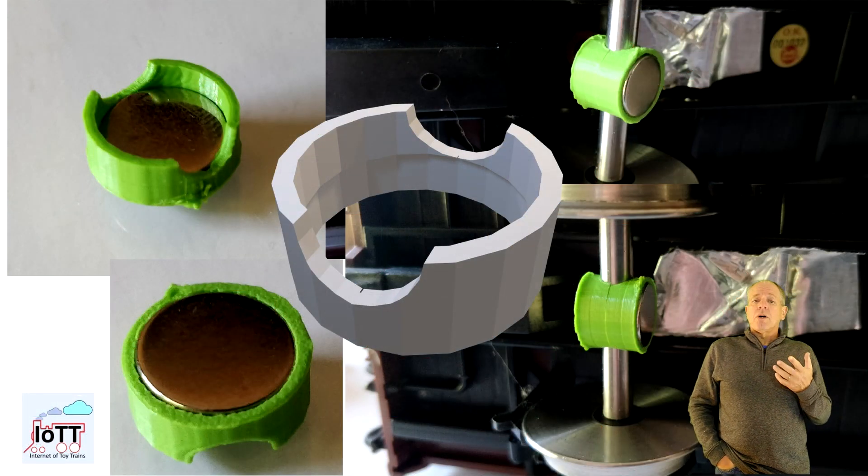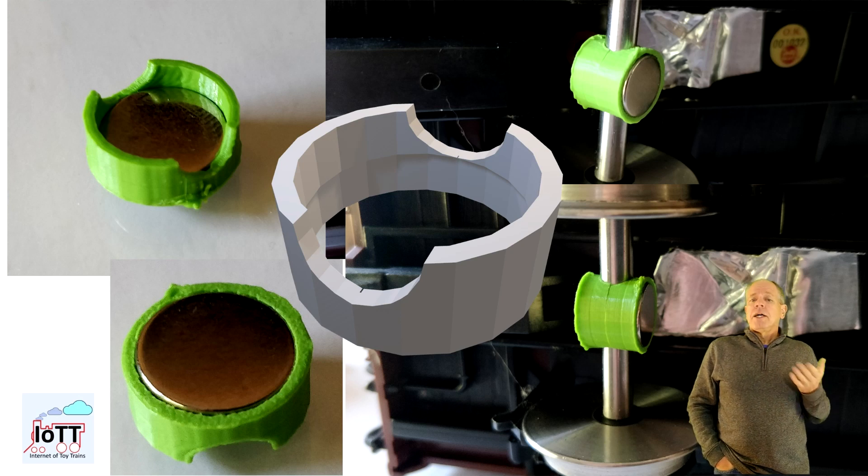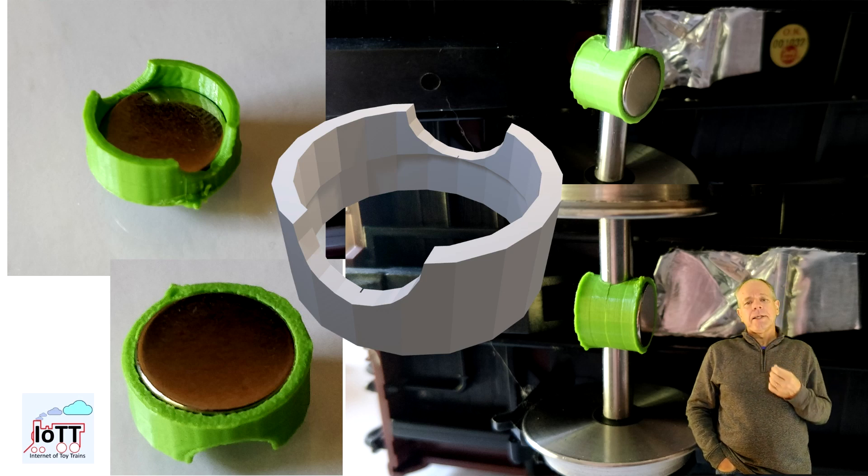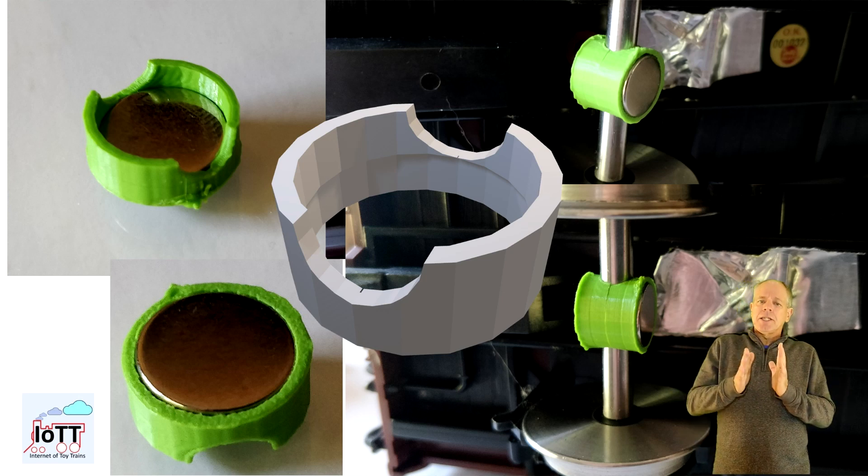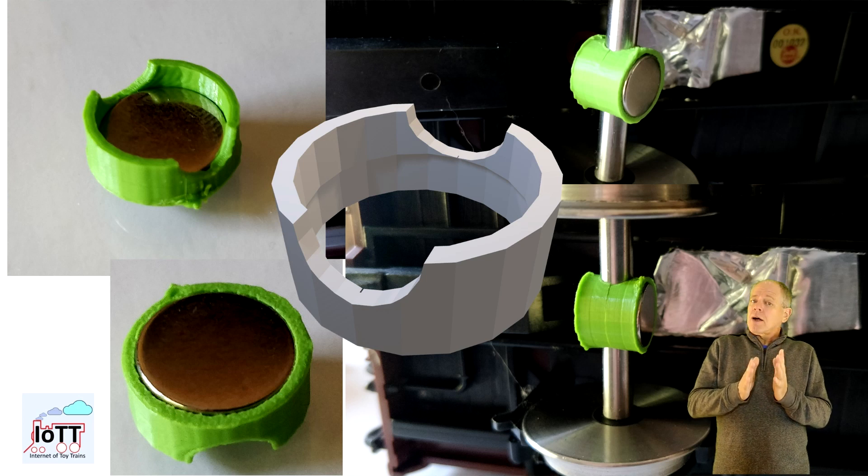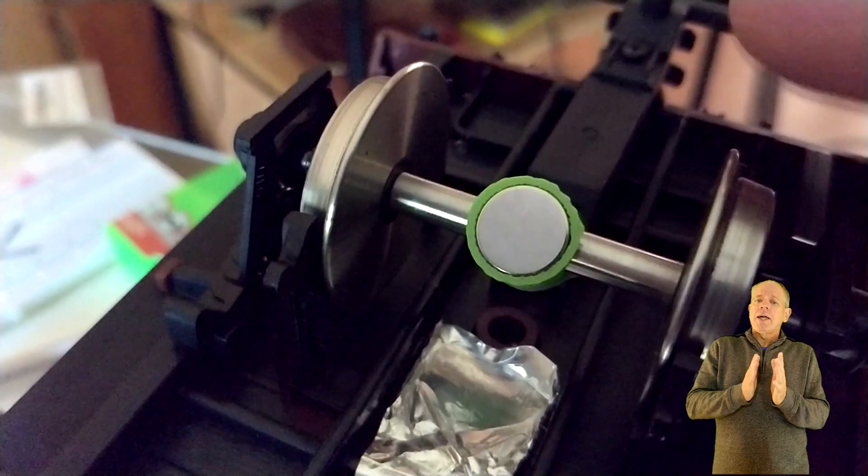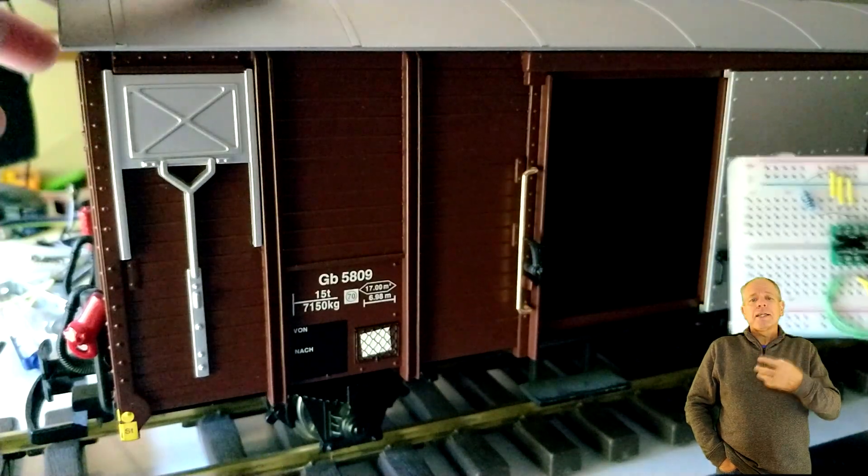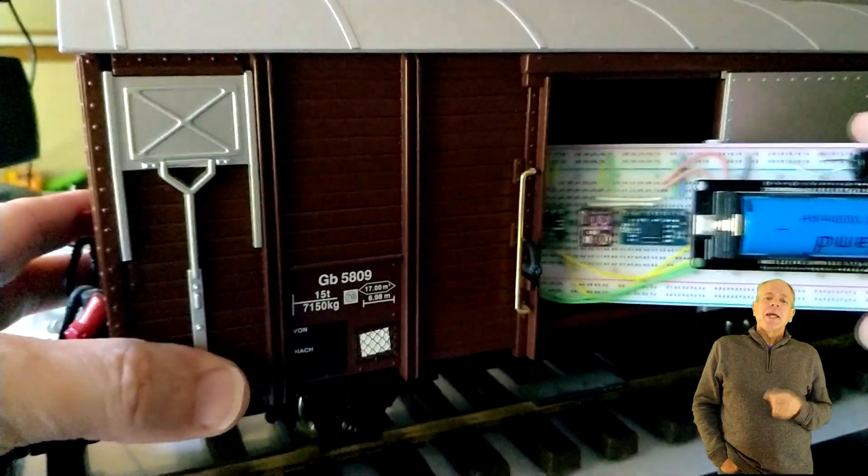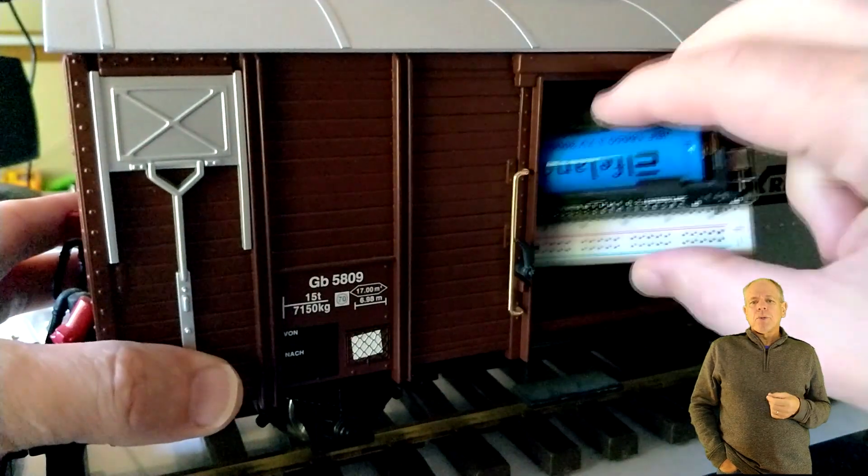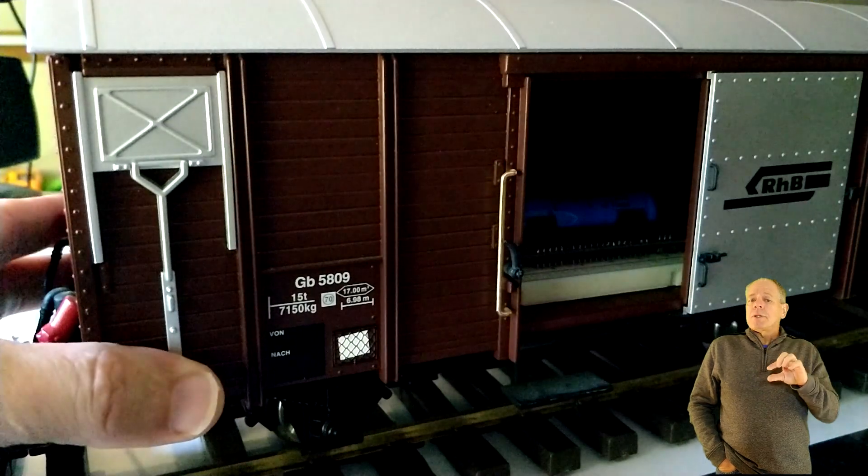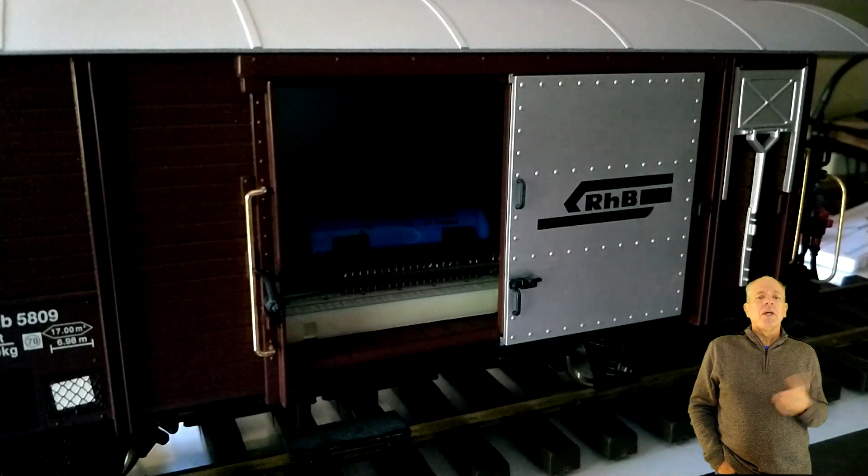So next I built a small 3D printed holder to install two magnets around the axle of a car, so that they would rotate with the wheel. Since each part of the holder has its own magnet, the two sides attract each other and keep the holder in place, while the cutout for the axle ensures a correct alignment, so that the magnetic fields of the two magnets merge together and look just like one field that is rotating as the wheels turn. Then I simply placed my prototype board inside the boxcar, so that the TMAG chip was located right above the center of the axle with the magnets.